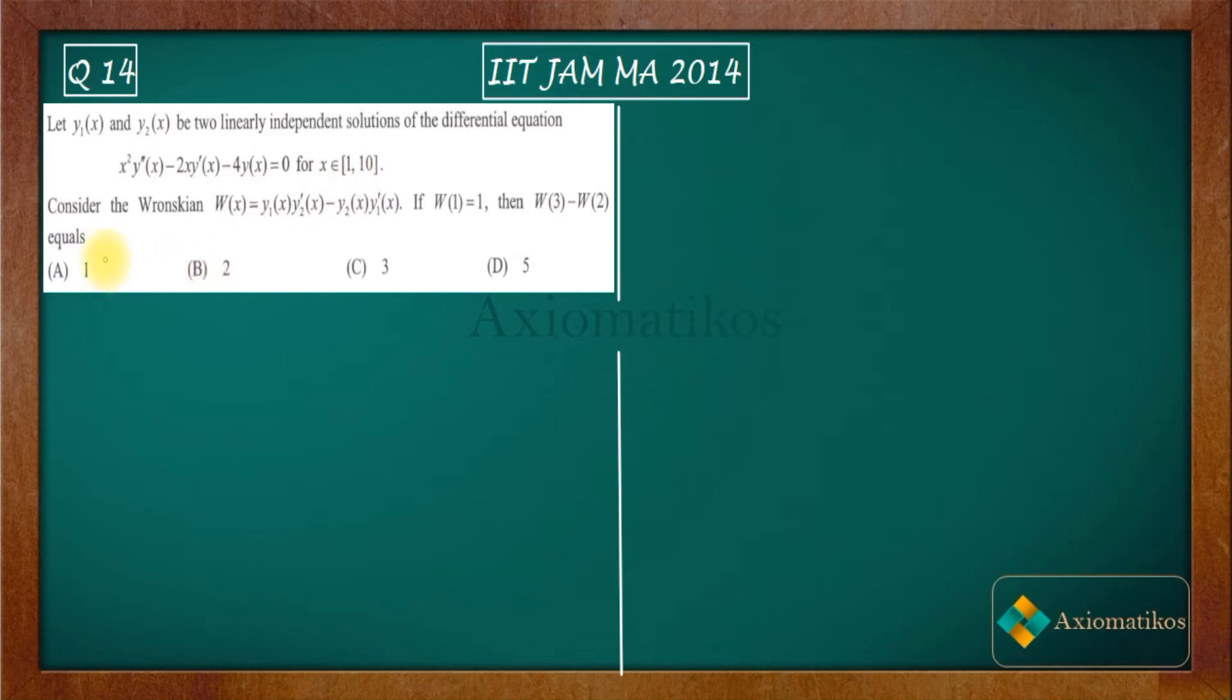Now what they are saying is consider the Wronskian W(x). The Wronskian is defined like this—we already know that. Now what they are saying is that if W(1) equals 1, then W(3) minus W(2) will be... So these are your options.